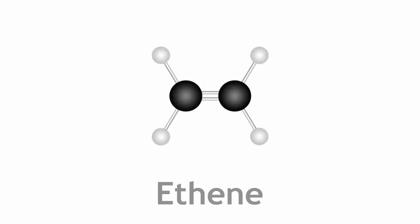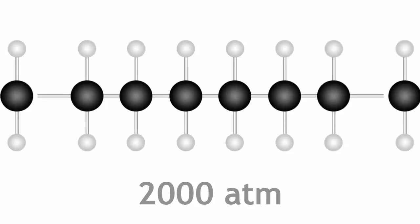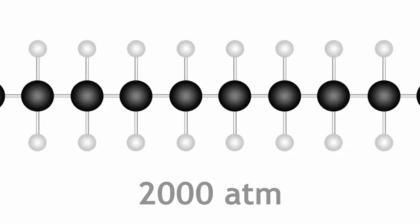Polymerization occurs when this double bond breaks at a temperature of around 200 degrees C and a very high pressure of 2000 atmospheres. When the double bond breaks, adjacent molecules link together to form very long molecules of this repeating unit.